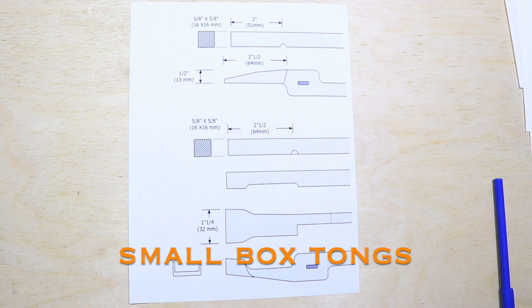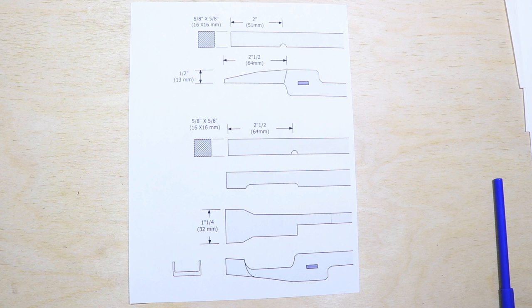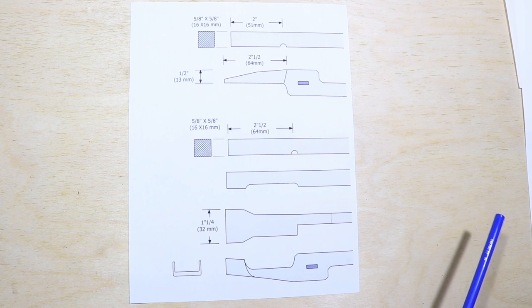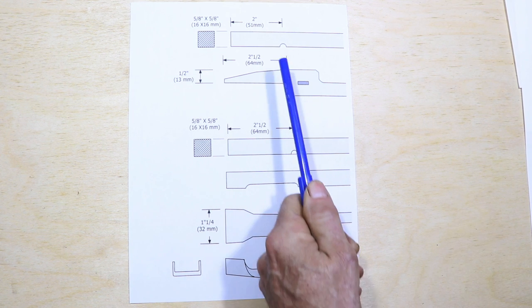Box tongs are again basically a flat bit pair of tongs that have one jaw that have been modified so that it can wrap around a piece of flat bar. The top jaw is just a standard flat bit jaw that is made with a two inch offset.